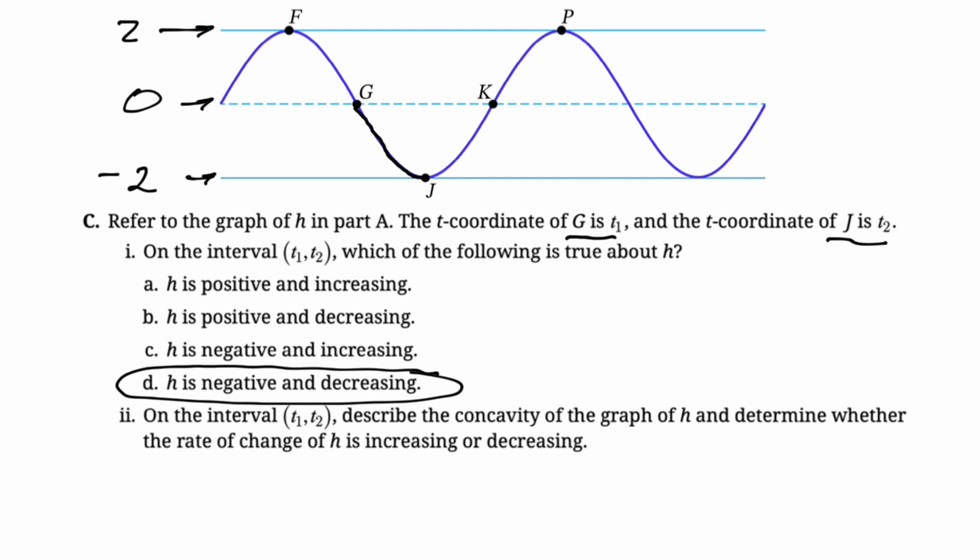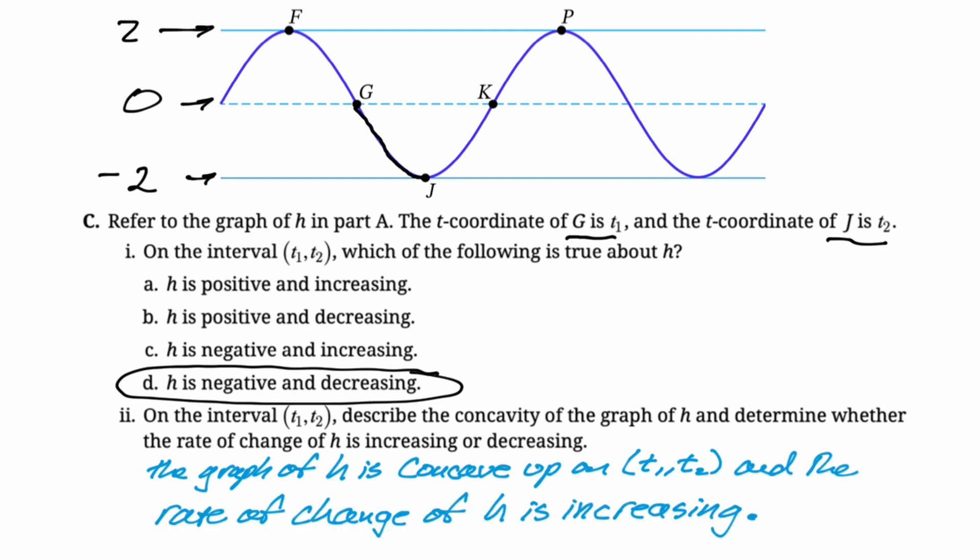Now the next part, again, always the same. Describe the concavity of the graph of h and determine whether the rate of change of h is increasing or decreasing. So if you say concave up, you have to say the rate of change is increasing. If you say concave down, you have to say the rate of change of h is decreasing. So this is, again, kind of like 50-50 if you know what you're doing. This is definitely concave up on this interval. So I would just say the graph of h is concave up on the interval from t1 to t2, and we just have to write it. So if we say concave up, we better say the rate of change of h is increasing. That's the entire problem. Pretty good problem. The period of this thing is crazy, but anyway, I hope this was helpful, and good luck.